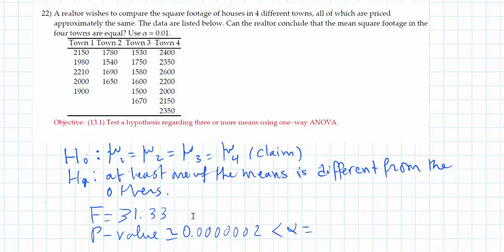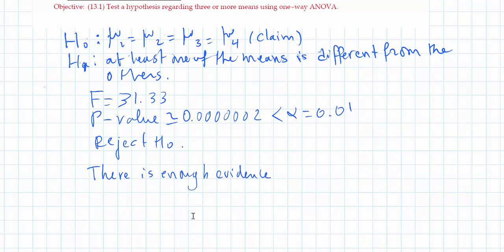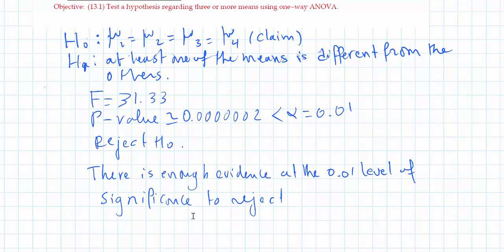The p-value is less than alpha, where alpha is 0.01, so our decision is to reject H0. Since the claim is H0, we reject the claim. There is enough evidence at the 0.01 level of significance to reject the claim that the square footage in all four towns are equal.